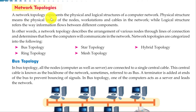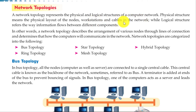Network topology means the physical and logical structure of a computer network. Physical structure means the physical layout of the nodes — nodes means computers, workstations, and cables connected with the network. Logical structure means how the information flows between them.